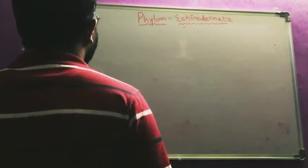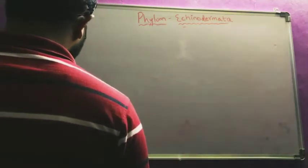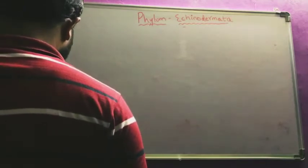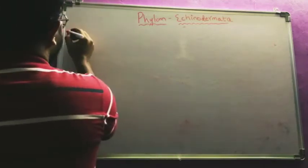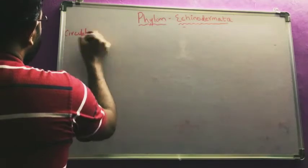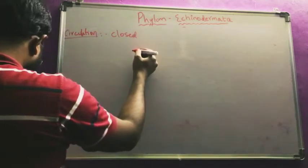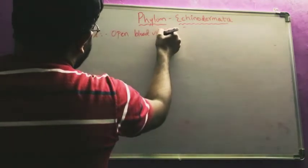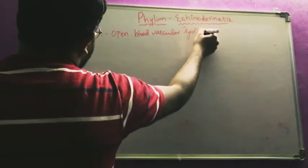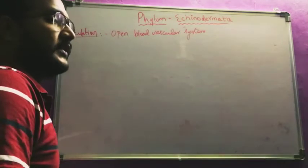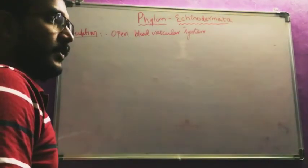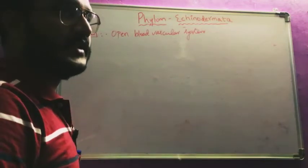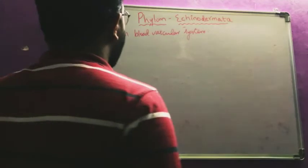Regarding the blood vascular system: Echinodermata exhibits an open blood vascular system. In comparison, Annelida has a closed circulatory system; Arthropoda has an open system; Mollusca — except class Cephalopoda — all exhibit open type, while Cephalopoda has a closed type. Echinodermata all exhibit open type of blood vascular system.